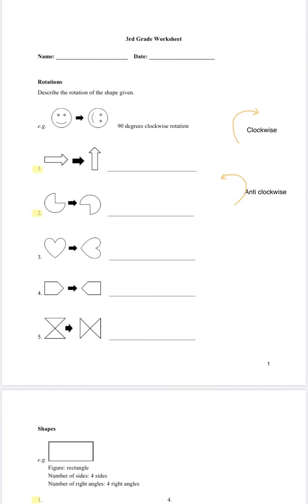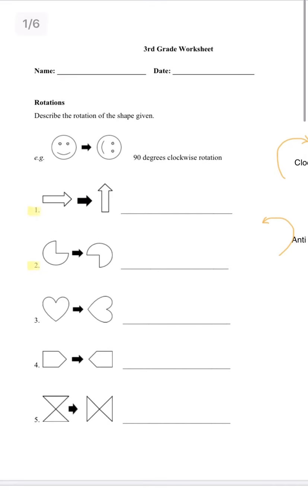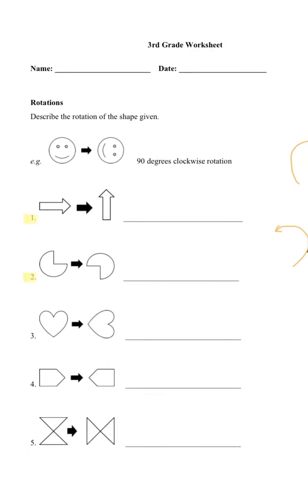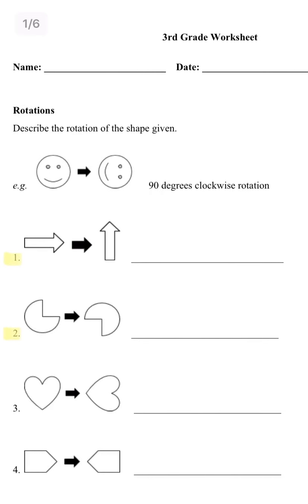Let's look at the first page: rotations. The direction says describe the rotation of the shape given. Looking at the example, the example has rotated 90 degrees clockwise.